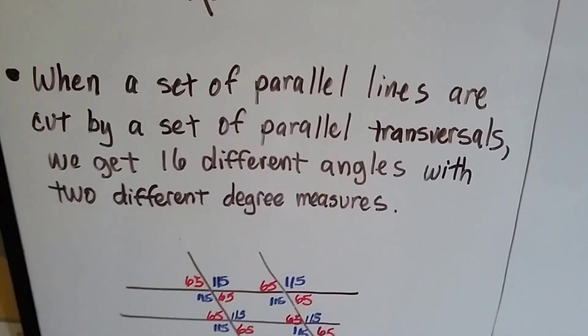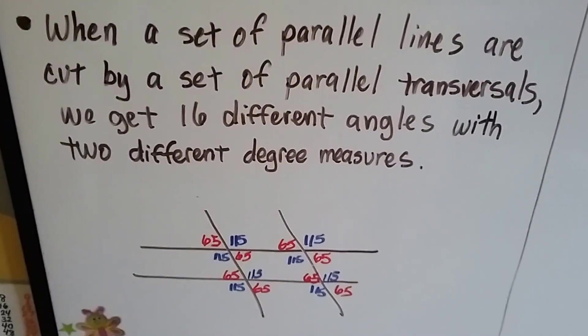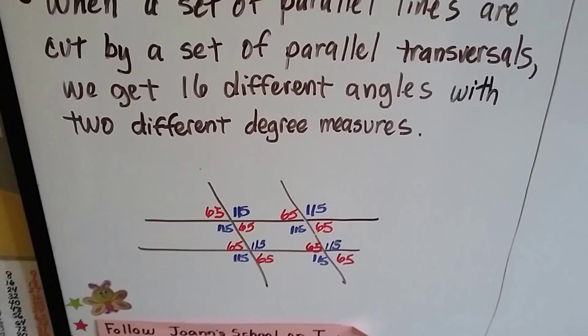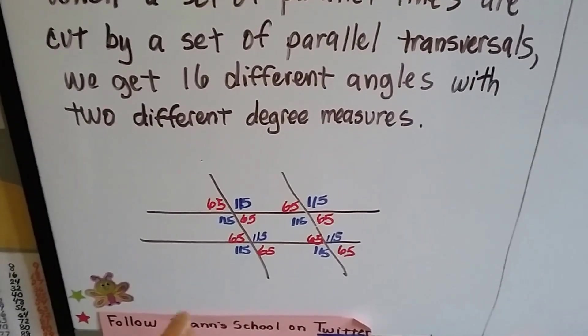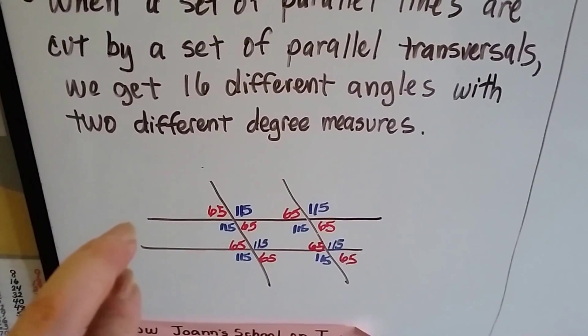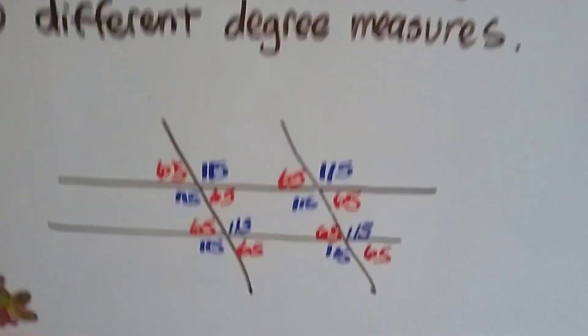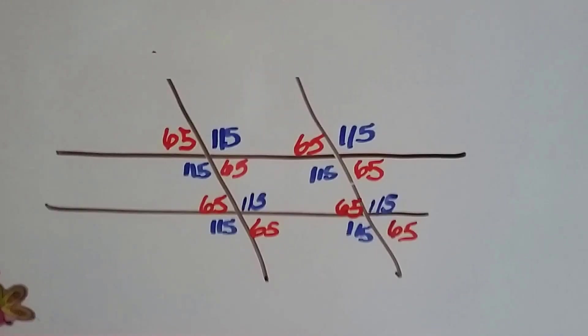So when a set of parallel lines are cut by a set of parallel transversals, we get 16 different angles with two different degree measures. So here we've got a set of parallel lines cut by parallel transversals. And again, just like we said in the last video, there's only two measures.